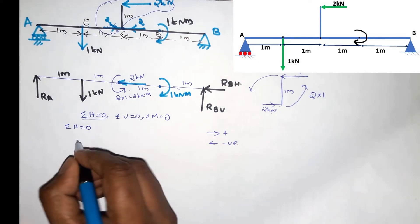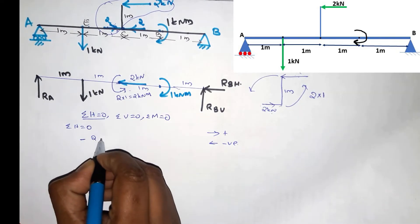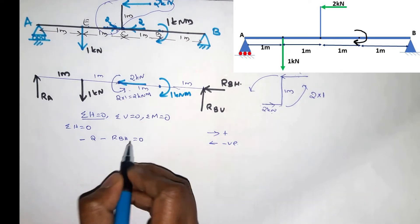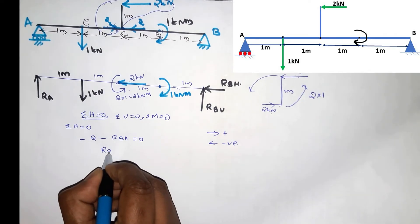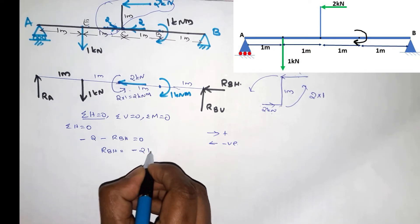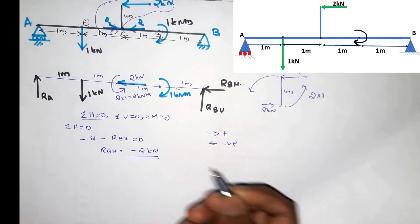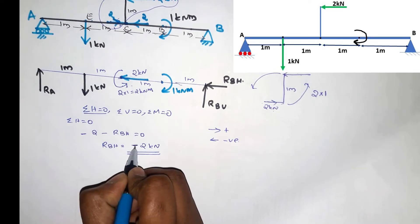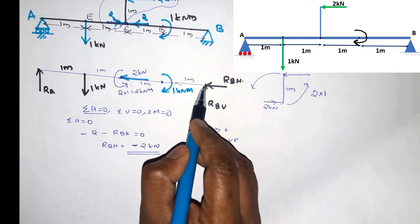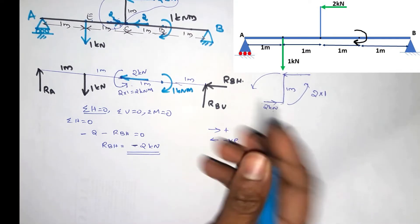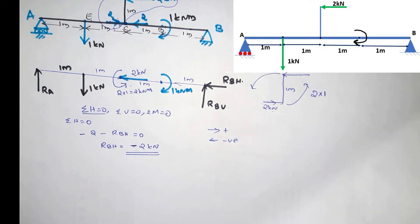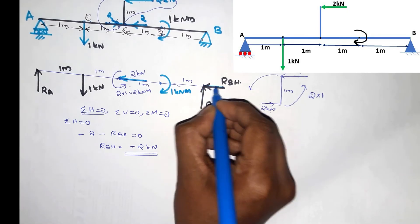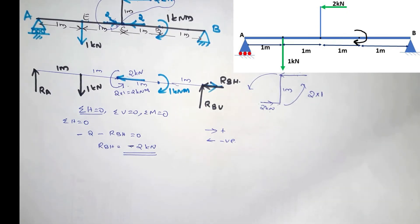Two forces are to the left. First: minus 2, plus Rbh is equal to 0. Rbh is equal to minus 2kN. The minus sign means the force has more focus to the left. Rbh is equal to minus 2 — this is the minus sign. The square bar is to the right.